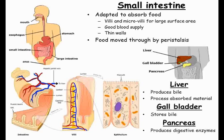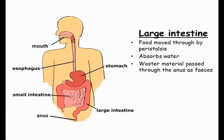Once it reaches the end of the small intestine, the nutrition which the body can absorb has been absorbed. It still contains a lot of water, however, and if all of this passed out there would be a real risk of dehydration. The large intestine then absorbs the water, leaving a drier waste material that is passed out and called faeces. This is material that the body was unable to break down so that it could be absorbed, such as fibre.